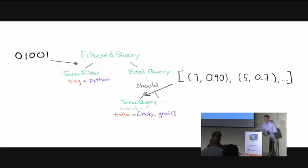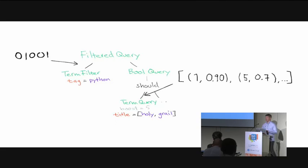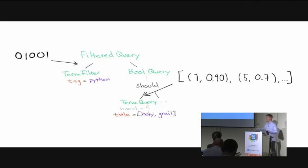Filters are pretty much the same per search and can be cached as a really compact bitmap. Queries, however, are scored — a document doesn't just match or not match, it matches to a certain degree. So queries are not cached; if you need to run the same query over and over, you should cache it in your application. Knowing this, you should prefer to use filters when you can, and use queries only when you need scoring.